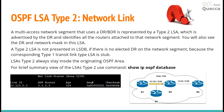A multi-access network segment that uses a designated router and backup designated router is represented by Type 2 LSA, which is advertised by the designated router and identifies all the routers attached to the network segment. You will also see the DR and network mask in this LSA. A Type 2 LSA is not present in the LSDB if there is no elected DR on the network segment, because the corresponding Type 1 Transit Link Type LSA is stub.